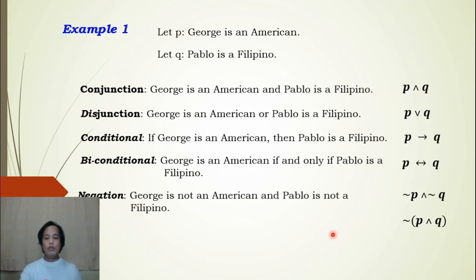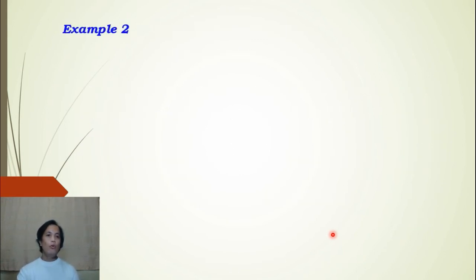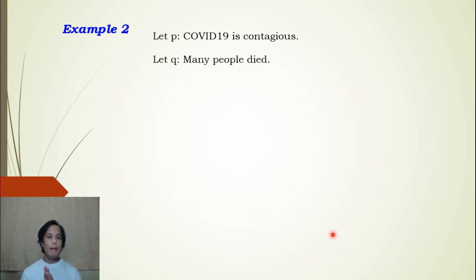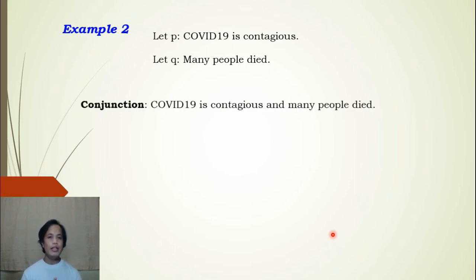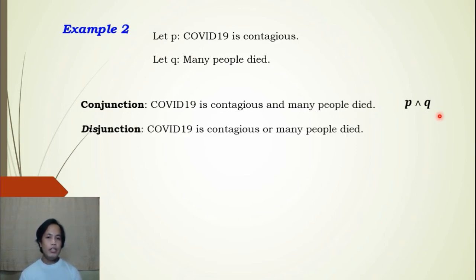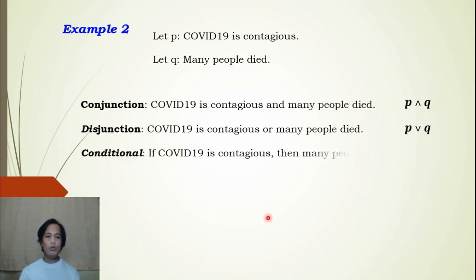Let us have example two. We let p: COVID-19 is contagious, and q: many people died. For conjunction: COVID-19 is contagious and many people died, using the ∧ symbol. For disjunction: COVID-19 is contagious or many people died, using the ∨ symbol. The difference is that conjunction uses 'and' and disjunction uses 'or.' For implication: If COVID-19 is contagious, then many people died, using the → symbol.